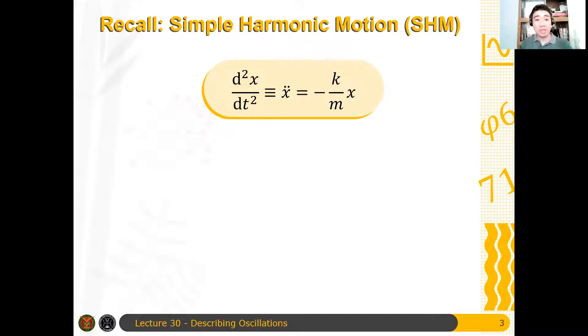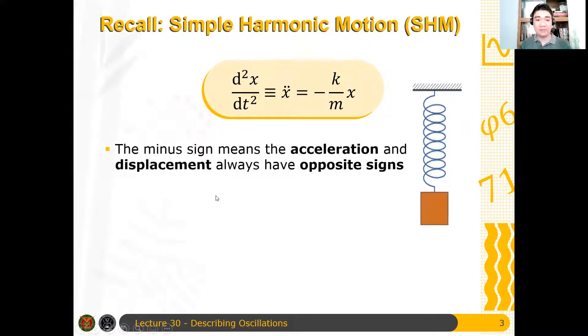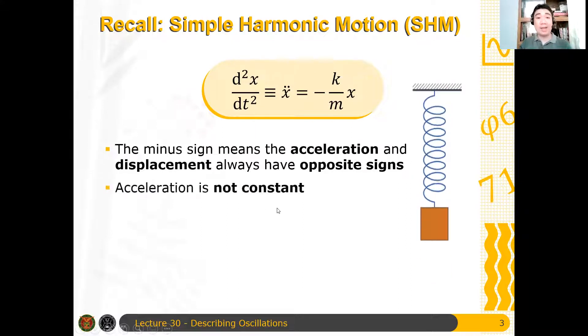Therefore, you have this equation of motion here. d squared x dt squared is minus k over m x. The minus sign indicates the acceleration and displacement always having opposite signs. And the acceleration is not constant.